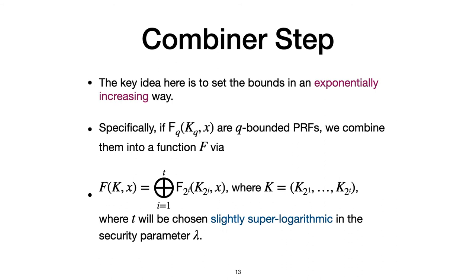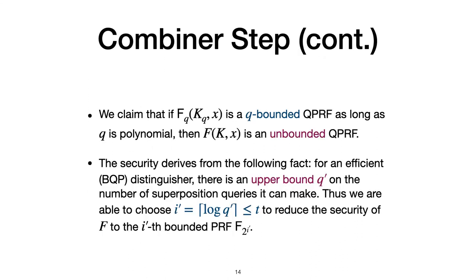Let's start with the second step, the combiner step. The key idea here is to set the bounds in an exponentially increasing way. Specifically, if fq is a Q-bounded PRF, we combine them into a function fx via adding all of them together from f2 to 1 to f2 to t. Here, t will be chosen slightly super logarithmic in the security parameter lambda. We claim that if fq is a Q-bounded QPRF, as long as Q is polynomial, then fx is an unbounded QPRF.